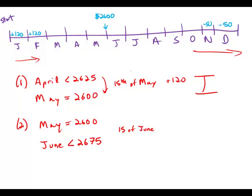Well, if we added $120, there'd be no way that it would go up and be a value less than $2,675. So the only way that we could get a value less than $2,675, starting from $2,600, is if we subtracted 50.